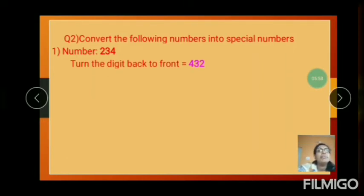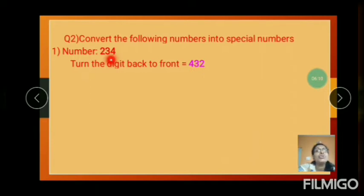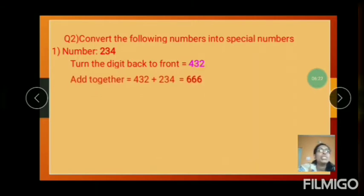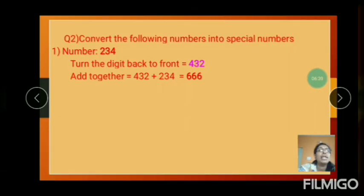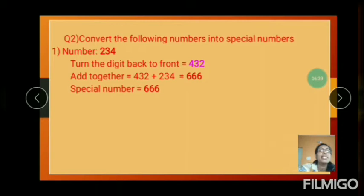The number is 234. Turn the digit back to front. The number is 234, so the reversed number is 432. To find the special number, add together: 432 plus 234. The number is 666, so the special number is 666.